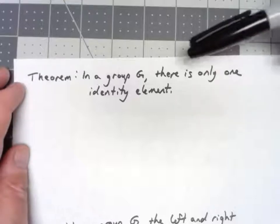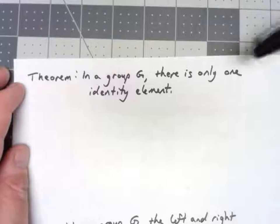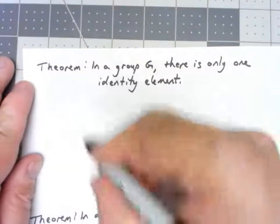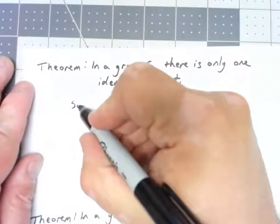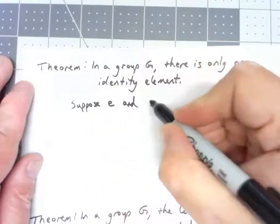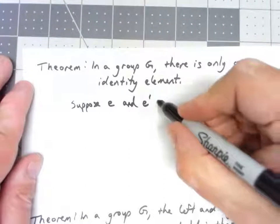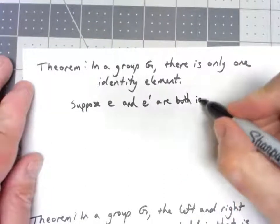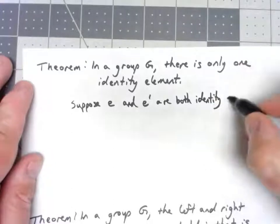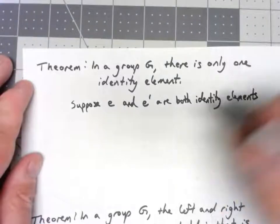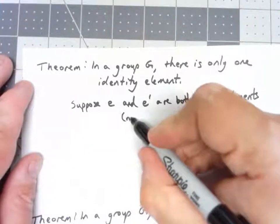So let's start with this one. In a group G, there's only one identity element. So let's start, let's suppose two things E and E' are both identity elements. I'm going to make a little bit of a note, not necessarily distinct.